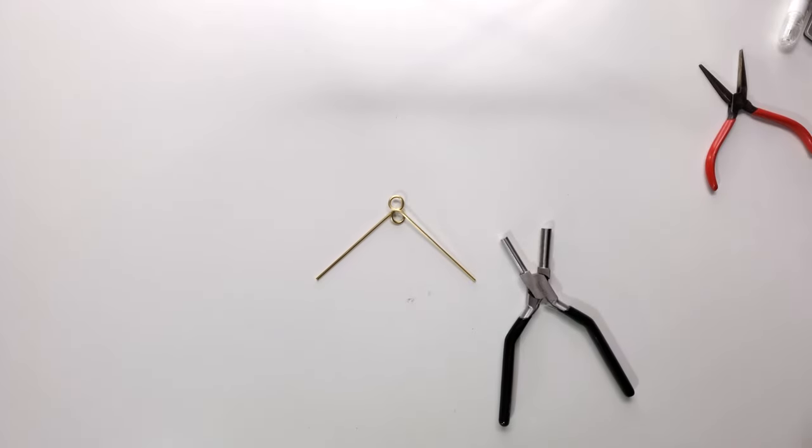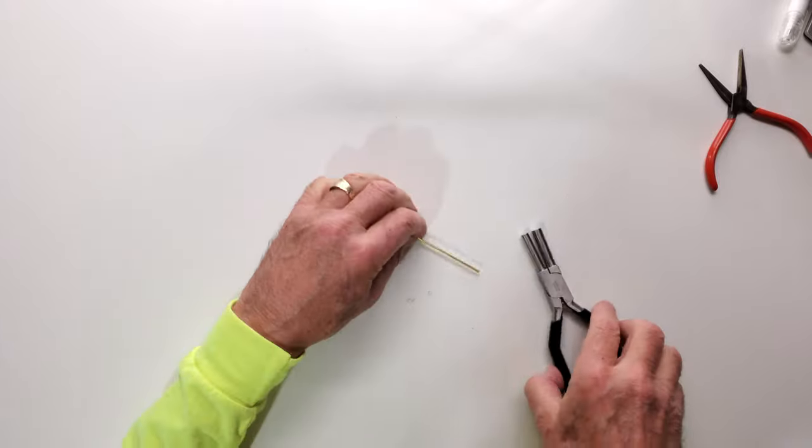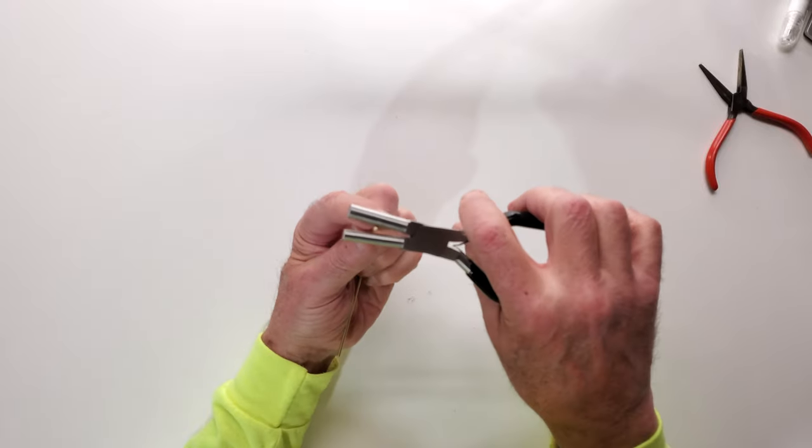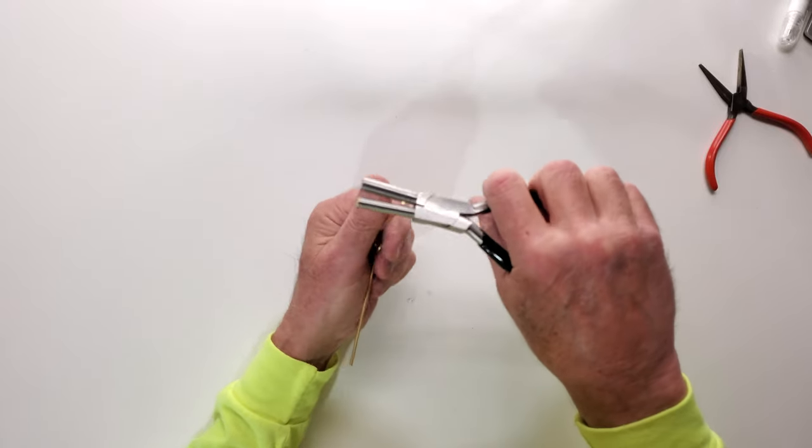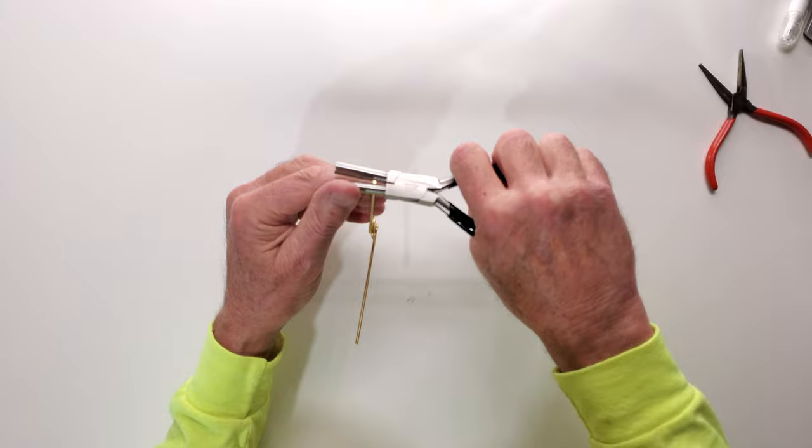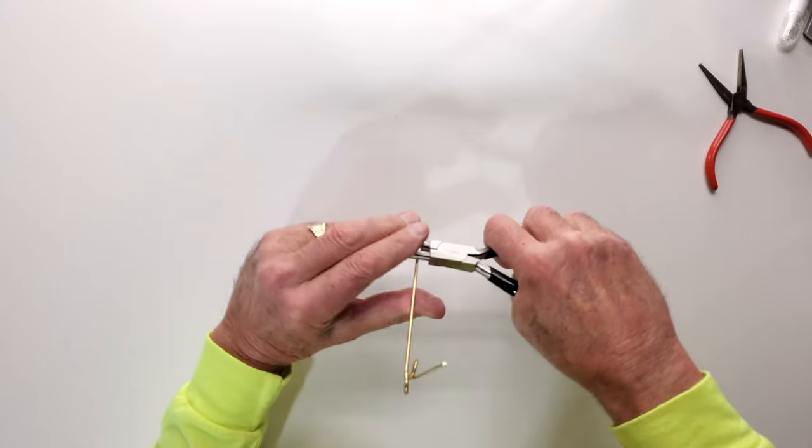I've got all the right angles in each of the arms. Now, what I'll be doing is taking each one of them and putting a 7-millimeter loop on the end of each arm.